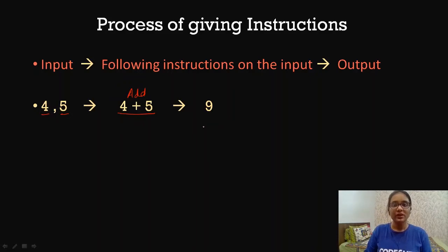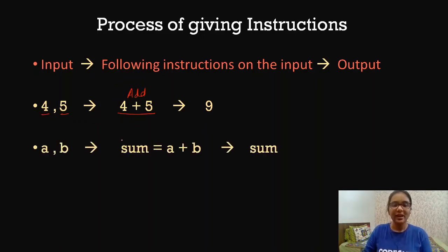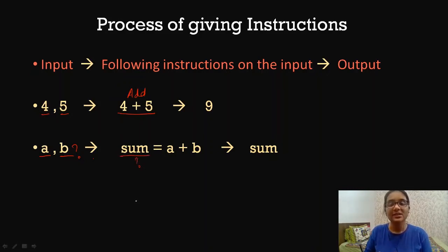But what if we want that whatever two numbers we give, we want them to be added? Here we have fixed two numbers, 4 and 5. But the other scenario is that we just give the command that whatever two numbers are given as the input, we need to add them. So for that, we have the concept of variables. What is this A and B? This A, B, and the variable 'sum' that you see here — all of these are known as variables.